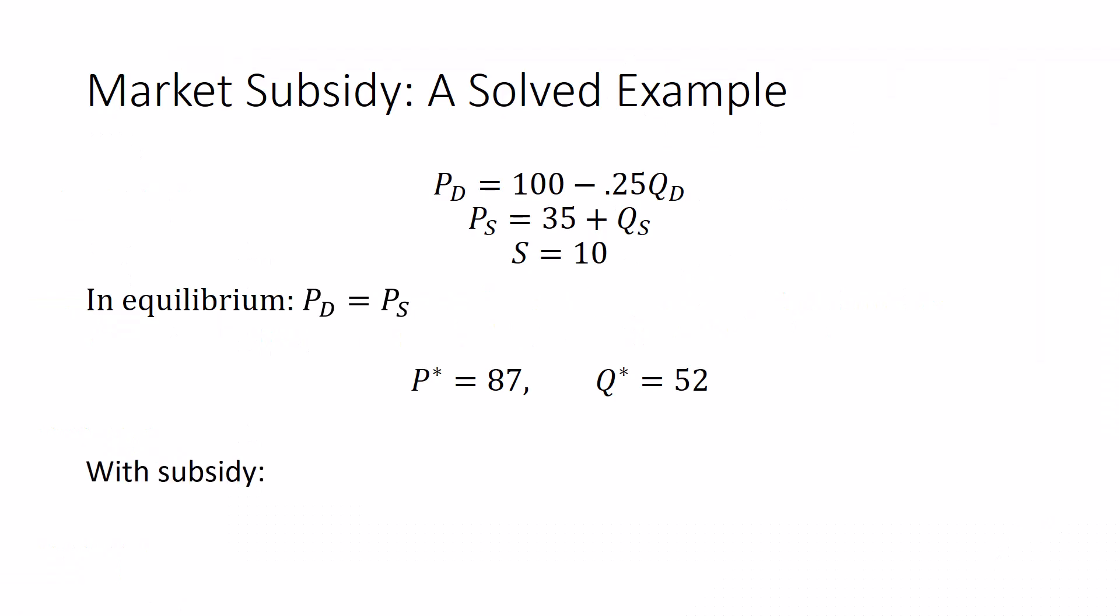With a subsidy, instead of setting PD equal to PS, we're going to set the demand price plus the subsidy equal to the supply price. In my previous subsidy video, I did all of this without math, but this equation was there to help us get the idea that the sellers will receive more money than the demanders pay. How much more? S more. In this case, $10 more.